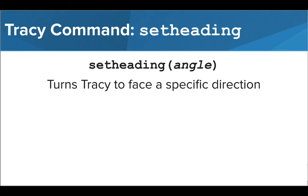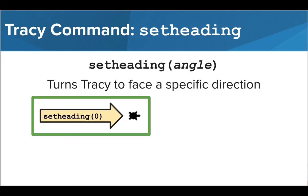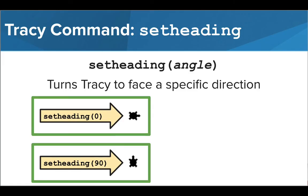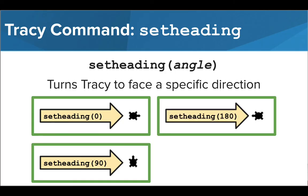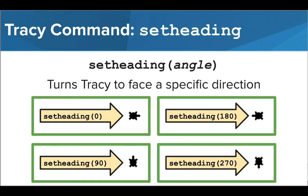Using an angle of 0 will turn Tracy to face right, an angle of 90 will have her face up, an angle of 180 will have her face left, and an angle of 270 will have her face down.